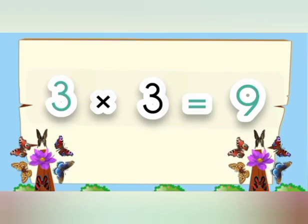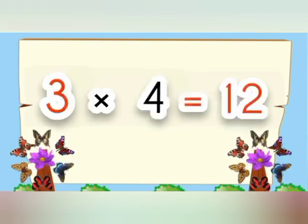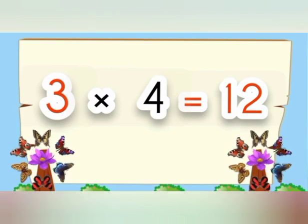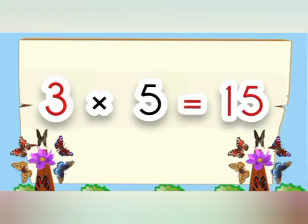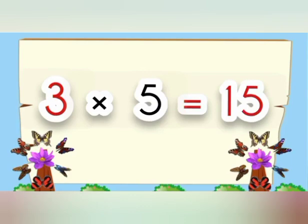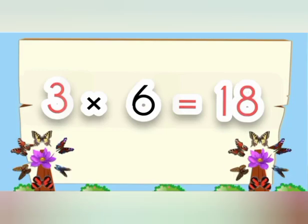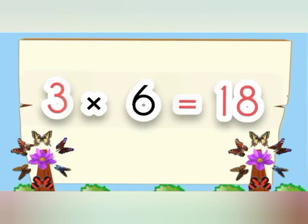3 times 3 is 9. 4 times 3 is 12. 5 times 3 is 15. 6 times 3 is 18.